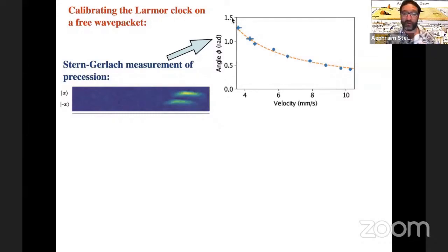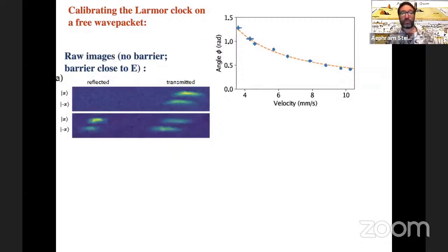And now we can turn the barrier back on. Here's a picture taken when the barrier height is very close to the kinetic energy of the atoms, so about half are transmitted and half are reflected. And if you look closely, you can see that the ratio of these plus and minus x spots seems to have changed.